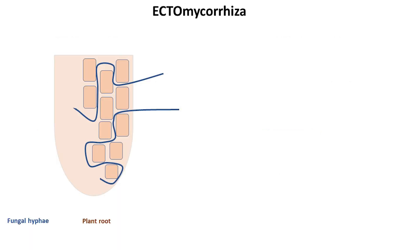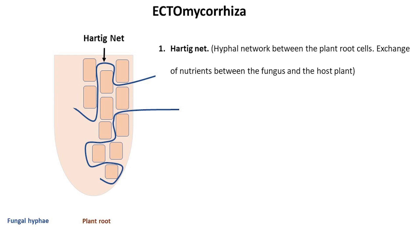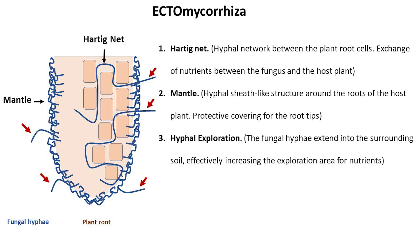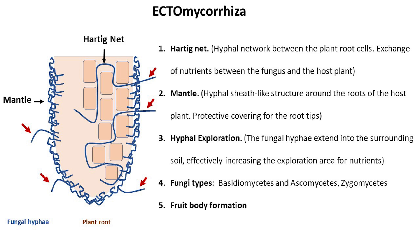Ectomycorrhiza: since fungal hyphae do not penetrate inside the root cells, they form a hyphal network between cells, also known as the Hartig net. This network facilitates the exchange of nutrients between the fungus and the host plant. Ectomycorrhizal fungi envelop the fungal root, forming a mantle. This external mycelial layer provides a protective covering for the root tips. The fungal hyphae extend into the surrounding soil, effectively increasing the exploration area for nutrients. Ectomycorrhizal fungi are predominantly basidiomycetes, some ascomycetes, and a very few zygomycetes. Many are capable of producing fruiting bodies on and under the ground, such as mushrooms or truffles.